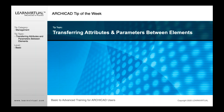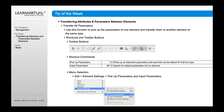So how do we transfer attributes and parameters between elements? Many of you have used the toolbar buttons within ARCHICAD — those toolbar buttons are the eyedropper and the syringe. The eyedropper will grab the elements or the attributes of elements, and the syringe will transfer those attributes to another element.